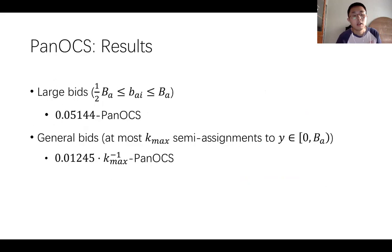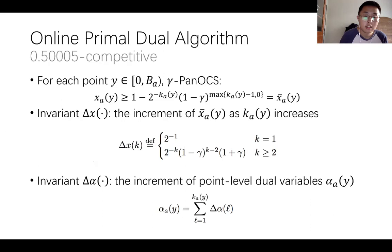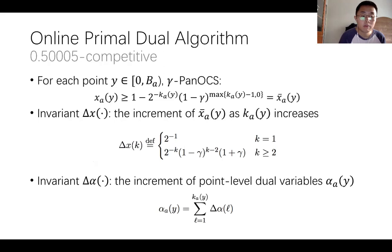Here are our results for the pan-OCS. Suppose all the non-zero bids are large; we prove that there is a 0.05144 pan-OCS. And for the general bids, suppose there are at most k_max semi-assignments to any point y; there is a 0.01245 times 1 over k_max pan-OCS. Next, I will introduce our online primal-dual algorithm based on all the previous ingredients, showing a 0.50005 competitive algorithm.